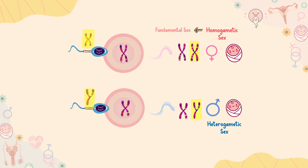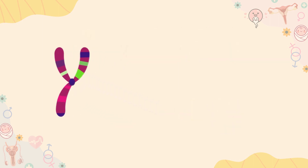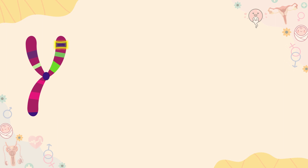Females are considered the fundamental sex. This is because all fertilised eggs would develop into females without significant chemical stimulation. To become a male, an individual must be exposed to the various factors initiated by a single gene on the male Y chromosome, known as the SRY, or sex-determining region of the Y chromosome.